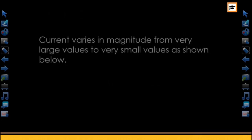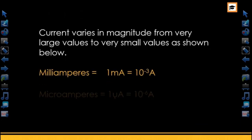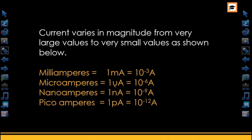From the lecture on units and measurement, we talked about prefixes, where very large or very small units can be expressed using letters or values. The same thing applies to current, because current can have very large or very small values.